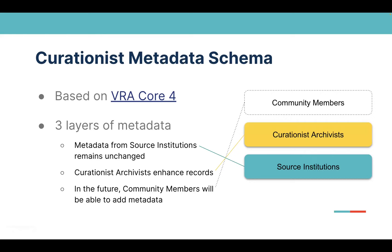I'll talk a bit about our metadata schema — it's a custom schema based on VRA Core 4. As many of you probably know, VRA Core 4 accommodates most of the basic museum fields: title, agent, location, cultural context. It's modified in that we're able to have at least three layers of metadata for each item, which could encompass multiple contributions. The metadata from the source institutions comes in unchanged and forms the base layer — that's the basic metadata we're sharing that remains unchanged.